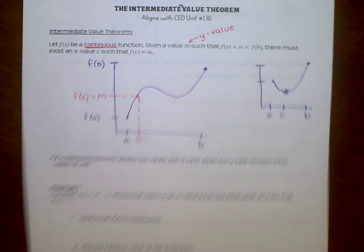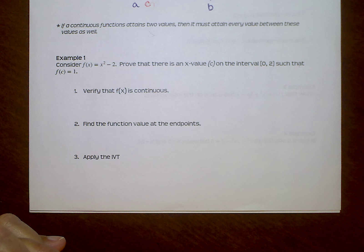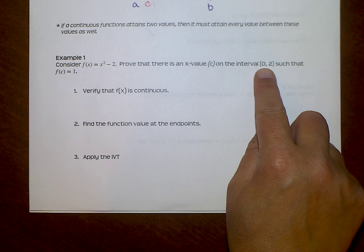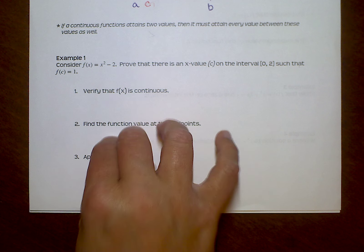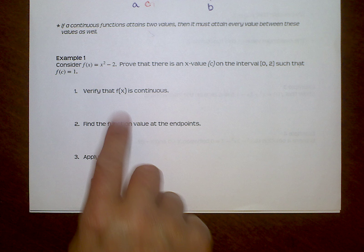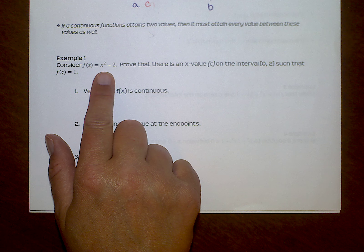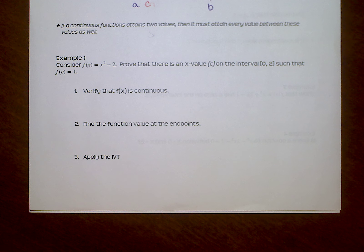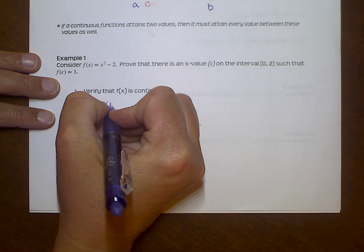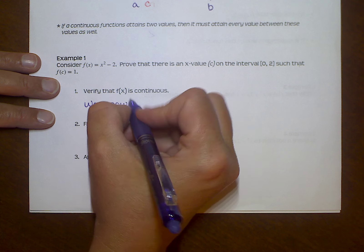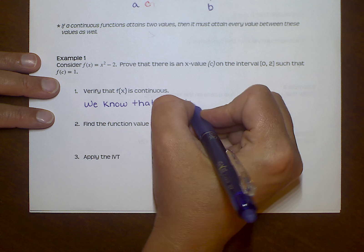Here's example one. Consider this function — prove that there is an X value on the interval zero to two such that F of C must equal one. The very first thing you're going to do is verify that this is continuous. This is a parabola — it's a quadratic — and polynomials are always continuous functions. So I would start my answer with: we know that F of X is continuous. Always have to point out the continuity. Even if the problem states it's continuous, take a moment to say since we know this is continuous, this is why we're allowed to do what we're about to do.